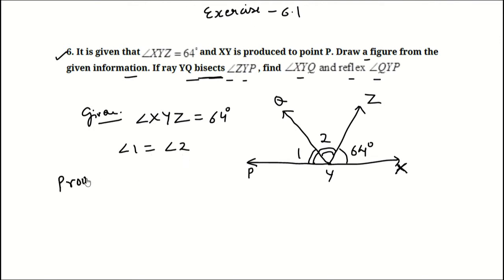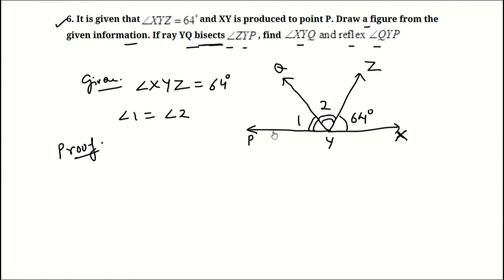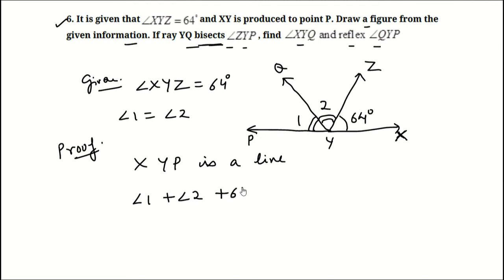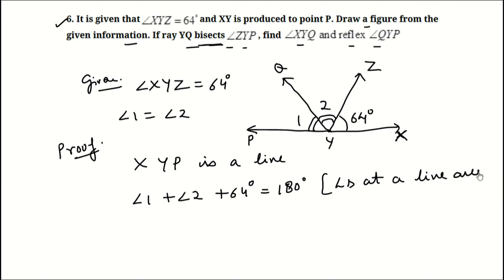Now let's solve this. XY is extended, which means X, Y, P is a straight line. So angle 1 plus angle 2 plus 64 degrees is equal to 180 degrees. The property used here is: angles on a straight line are supplementary.